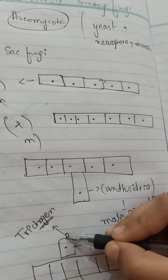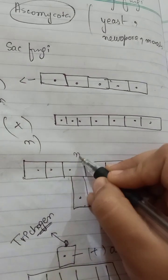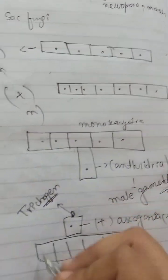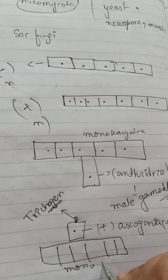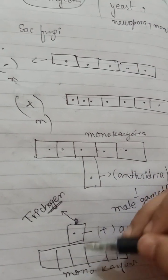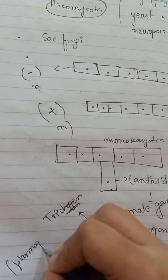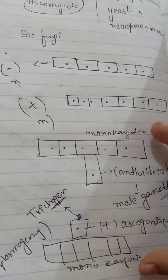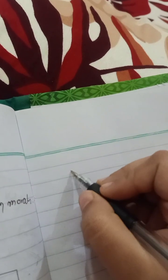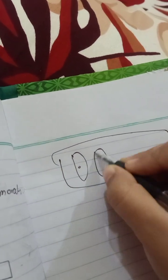Both structures are monokaryotic, each having one nucleus. Their cytoplasm will fuse together, and this is called plasmogamy. As a result of plasmogamy, a dikaryotic stage will occur, because monokaryotic plus monokaryotic fusion produces a dikaryotic cell.